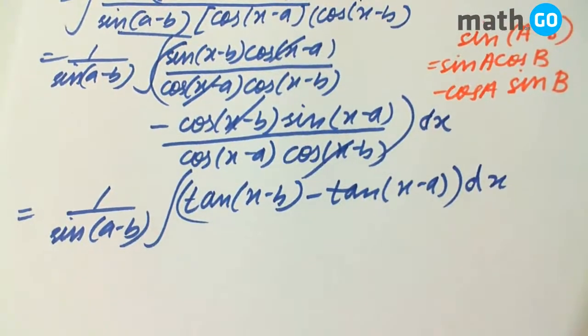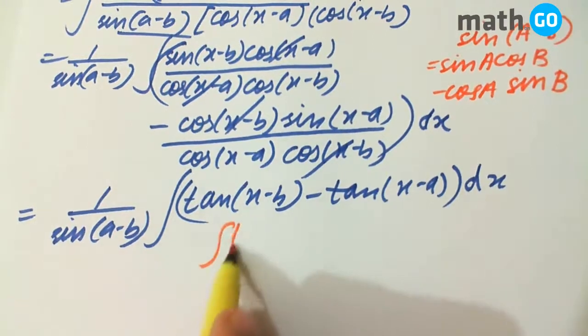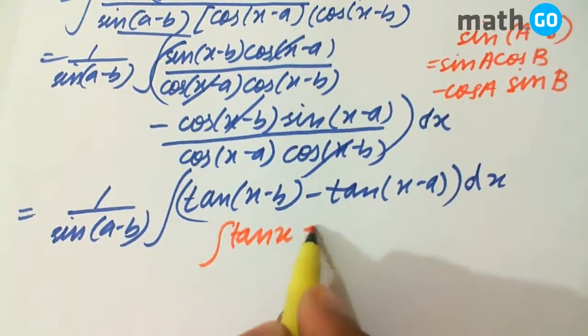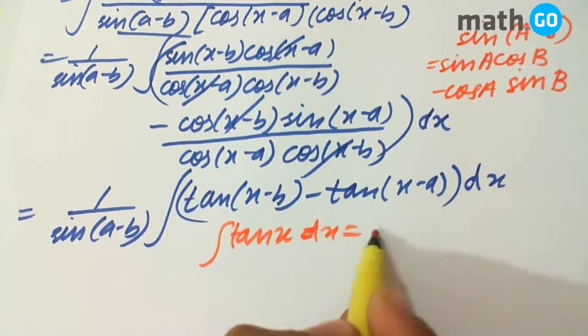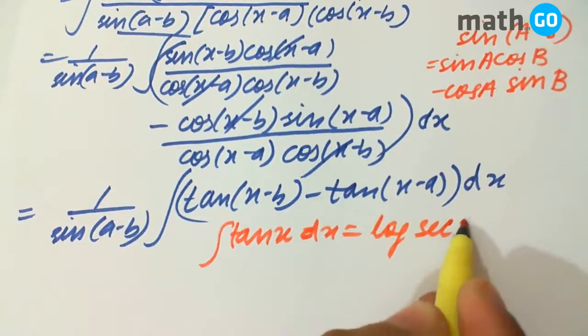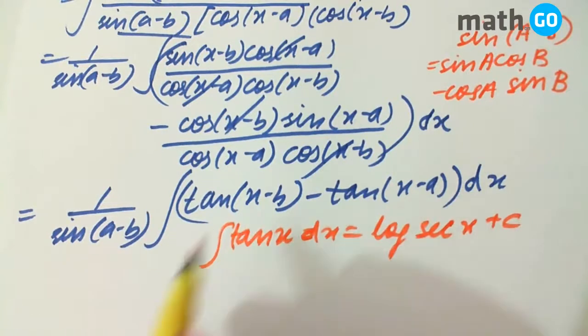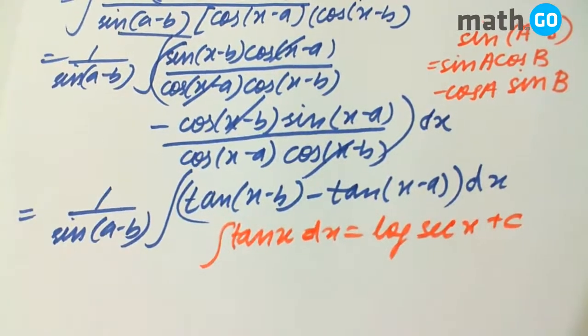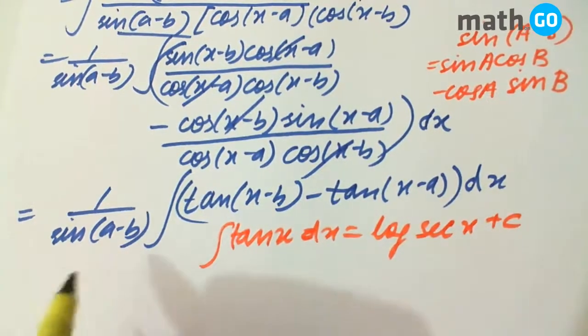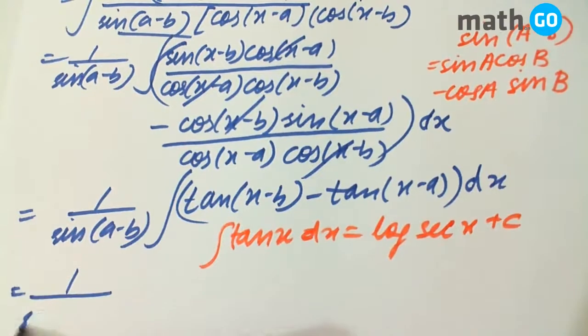And we know the formula that the integral of tan(x) dx equals log of sec(x) plus C. So applying the same formula here, we get the answer as log of sec(x-b) minus log of sec(x-a) plus C.